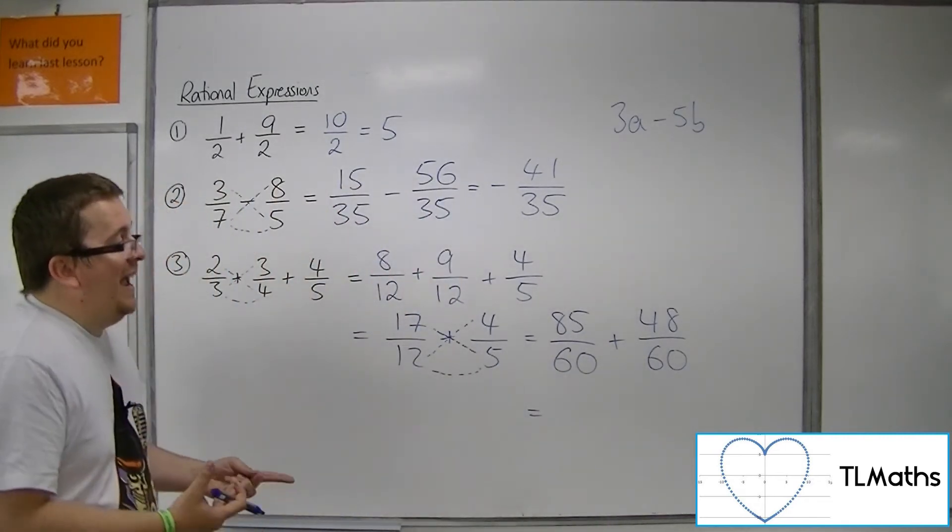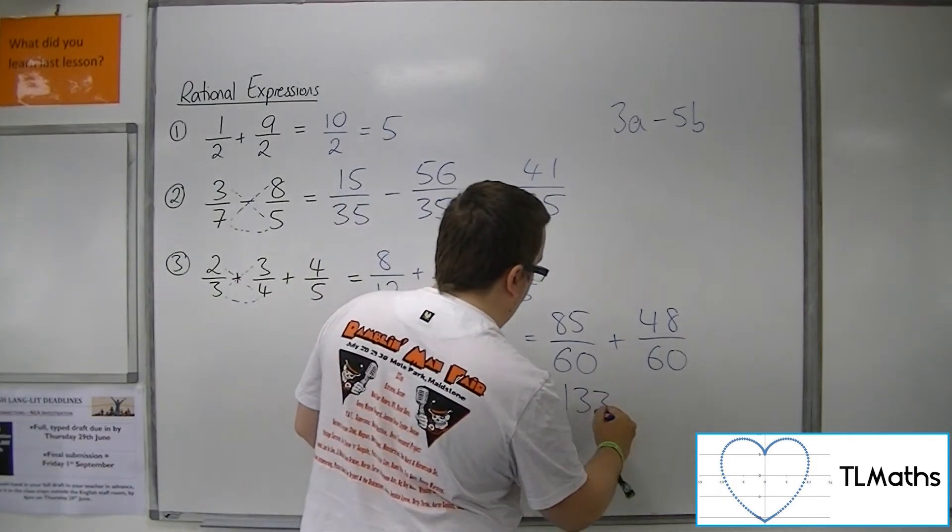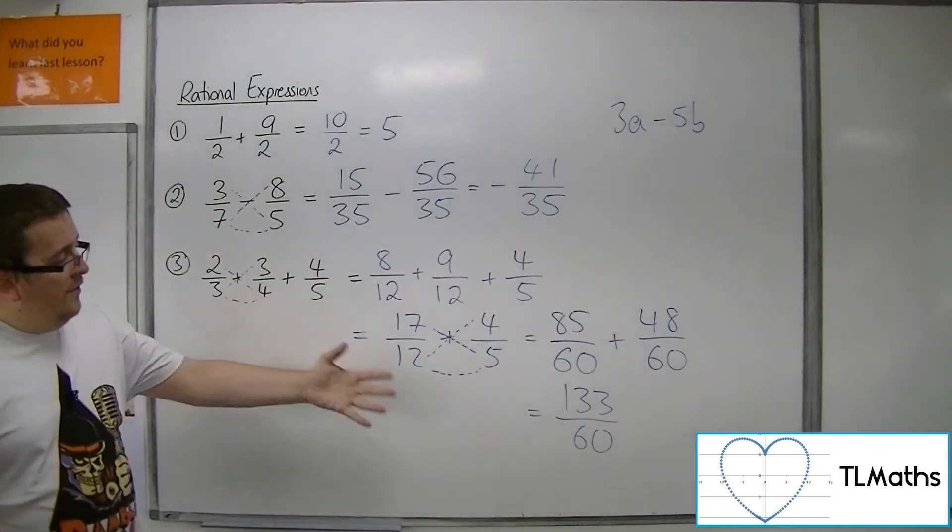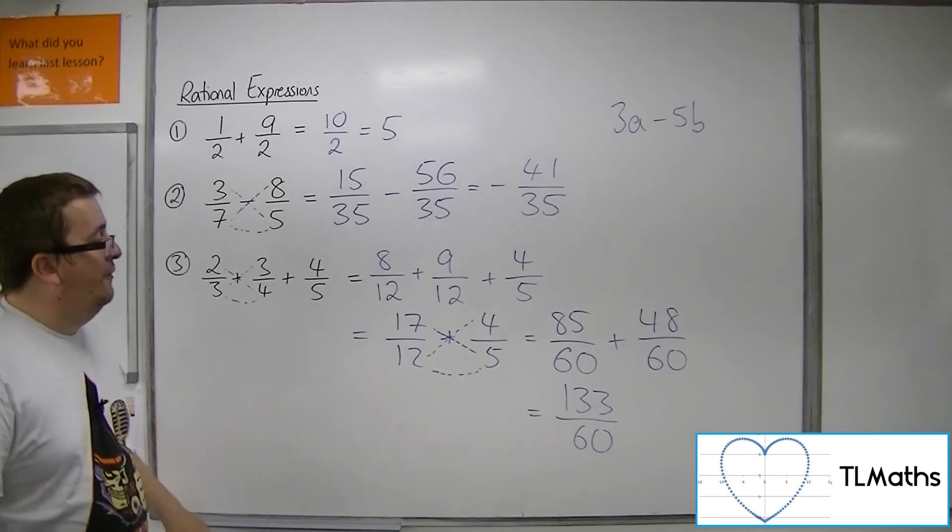Now I just need to add 85 and 48, so that's 133 over 60. And so that is the answer to adding those three fractions together.